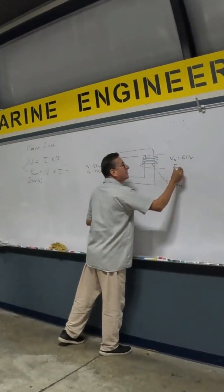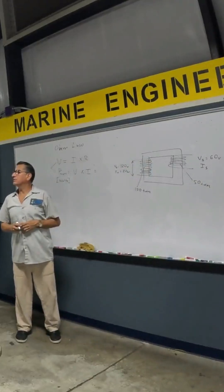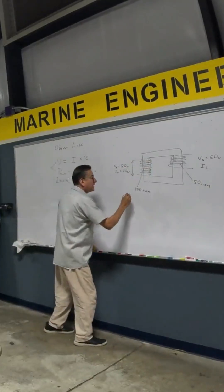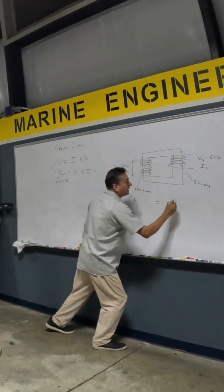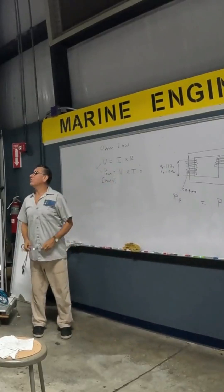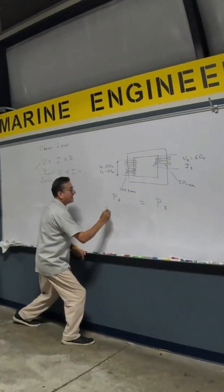How much is the intensity here in the secondary? That's the million dollar question. It's too simple. The power in the primary should be equal to the power in the secondary. What is the formula for power?